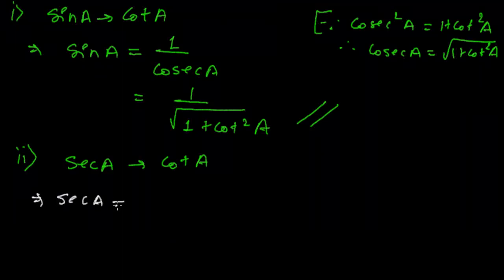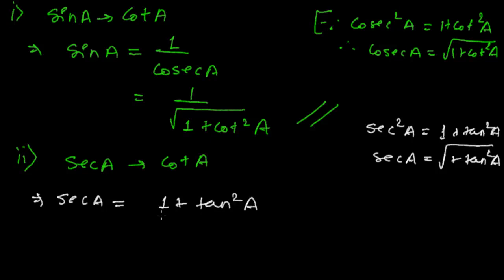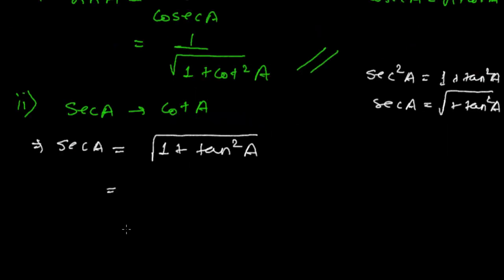sec A is equals to, you know, let me write here first the expression, that is sec square A is equals to one plus tan square A. So I can write sec A as one plus tan square A but it's under root. So sec A equals to one plus tan square A but under root, it's root over.